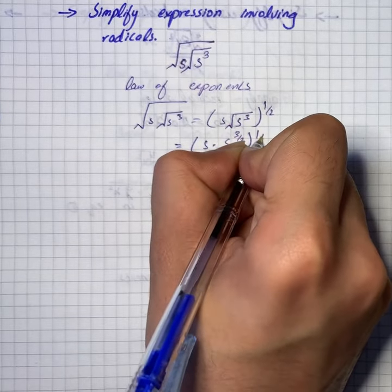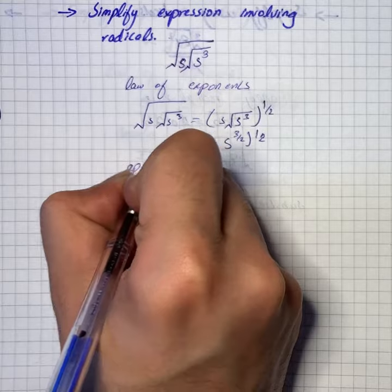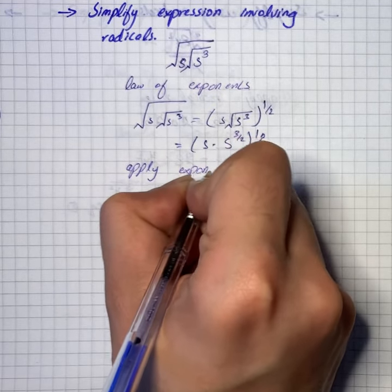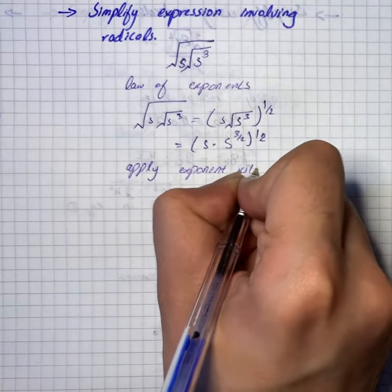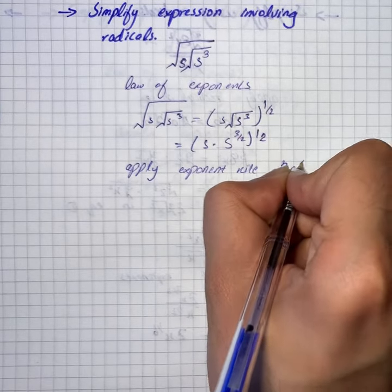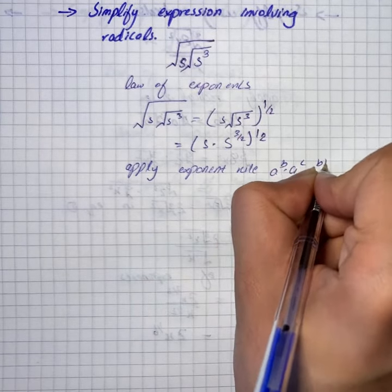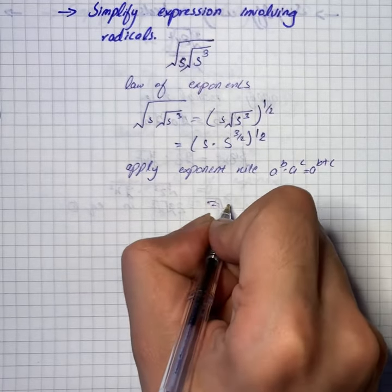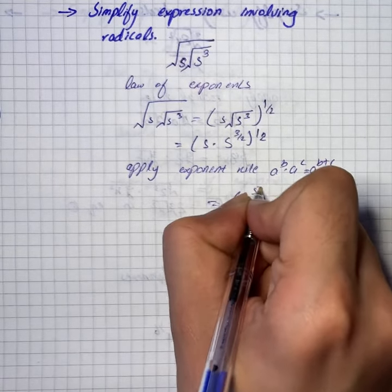Now we will apply the exponent rule that says a raised to power b, times a raised to power c, is equal to a raised to power b plus c. So this gives us s raised to the power 5/2.